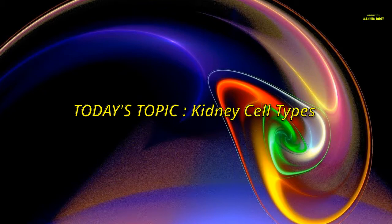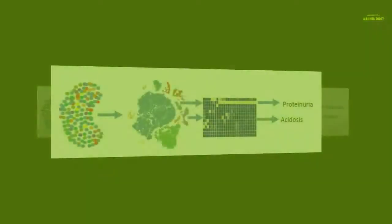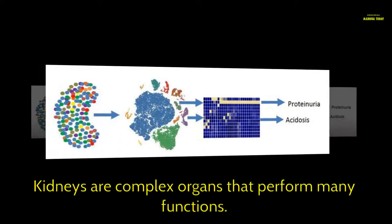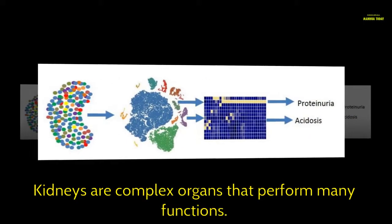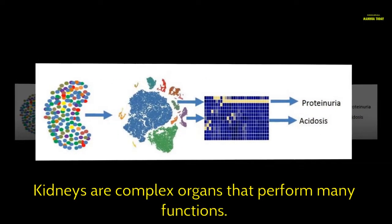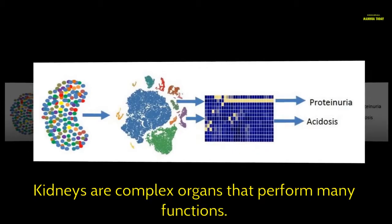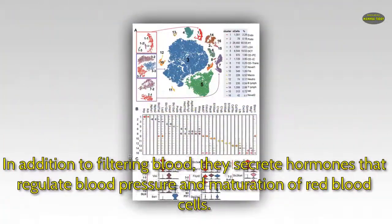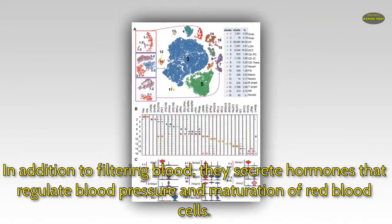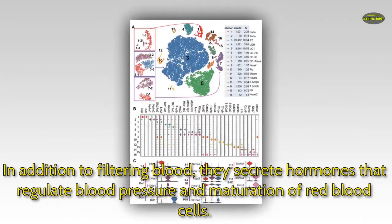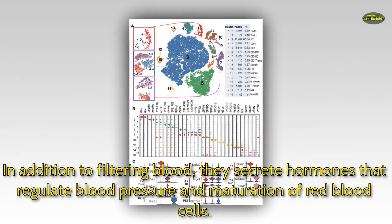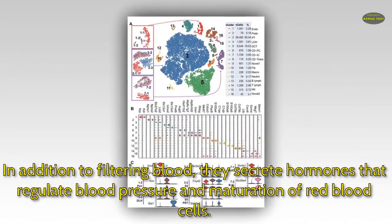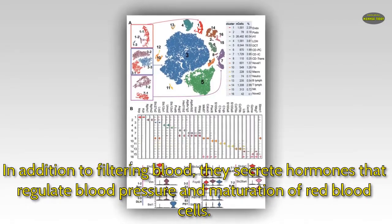Today's topic: Kidney Cell Types. Kidneys are complex organs that perform many functions. In addition to filtering blood, they secrete hormones that regulate blood pressure and maturation of red blood cells.